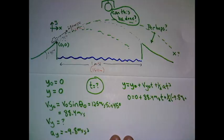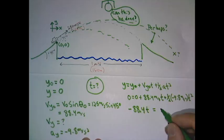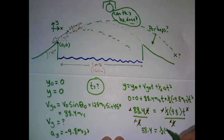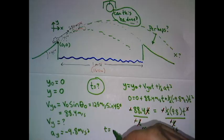So I'll simplify this a little bit. I'll subtract the 88.4 t term to the other side. And if I divide both sides by negative t, one of the t's cancels out. I don't actually have to solve a quadratic. I'll just directly solve this for t. And when I do, we get a whopping 18 seconds.